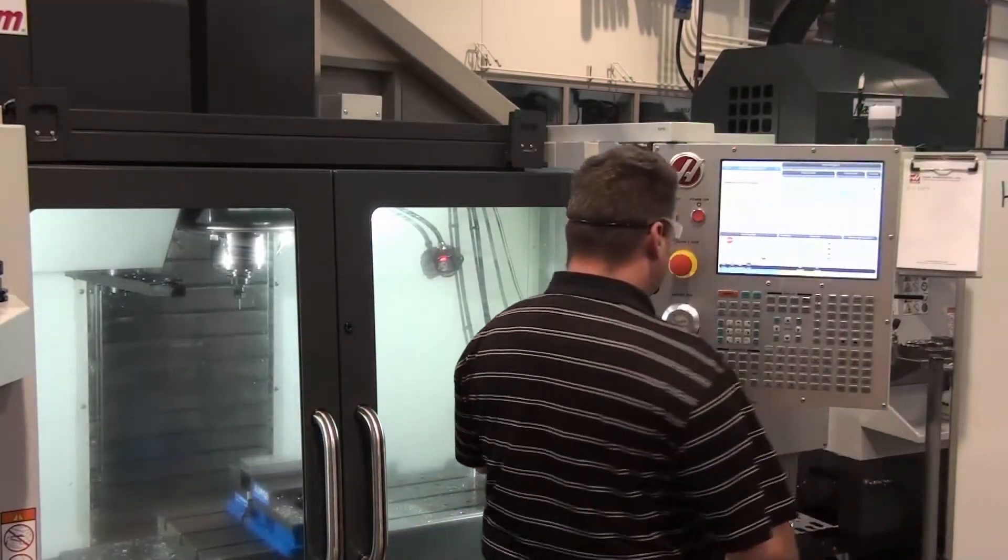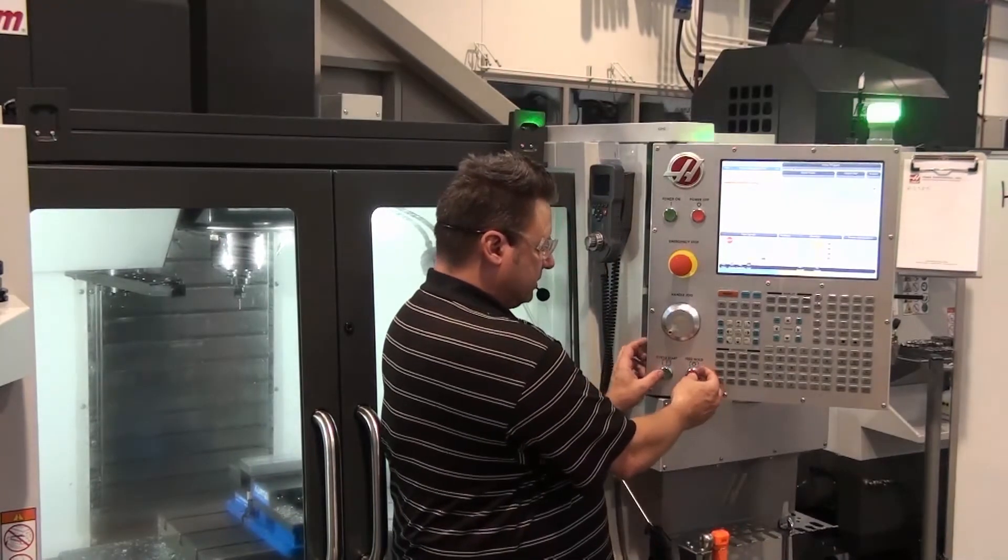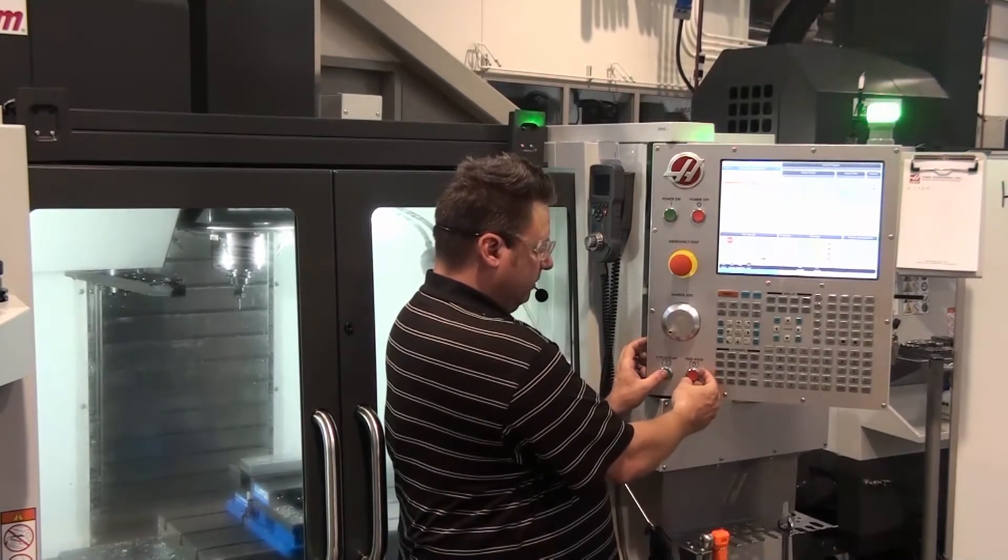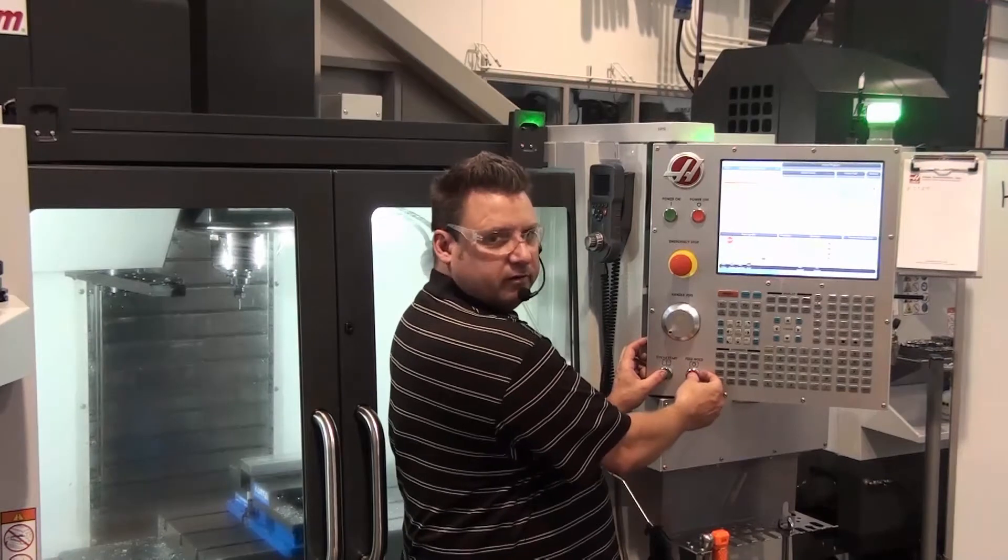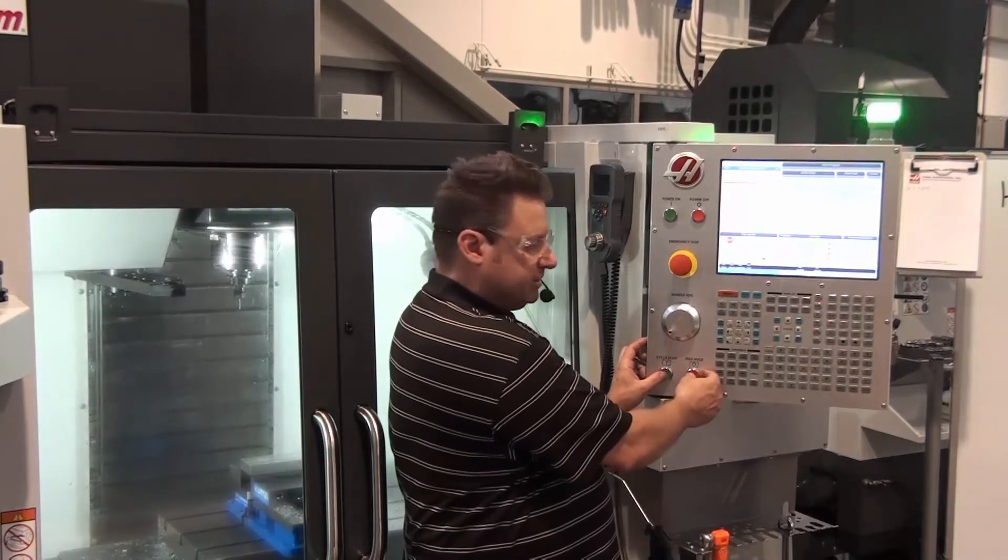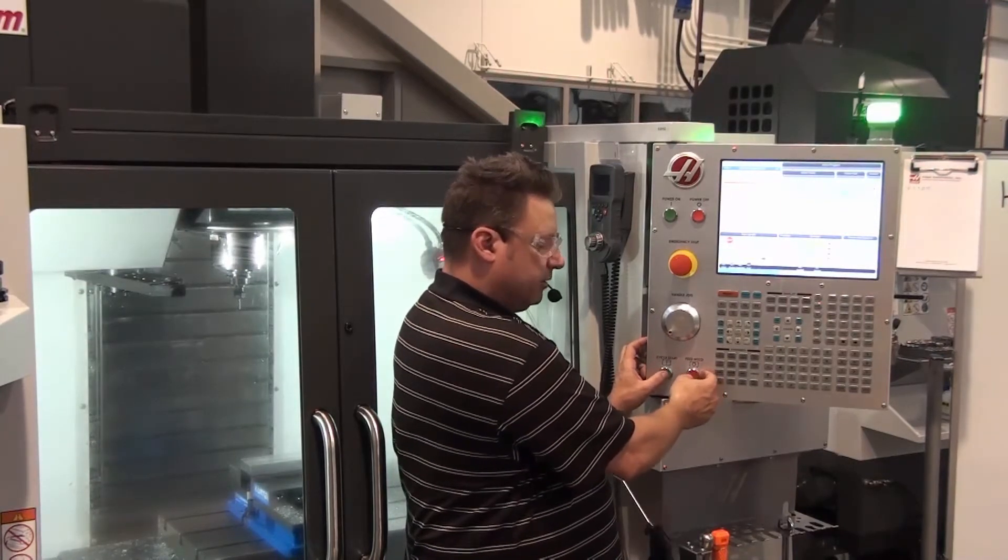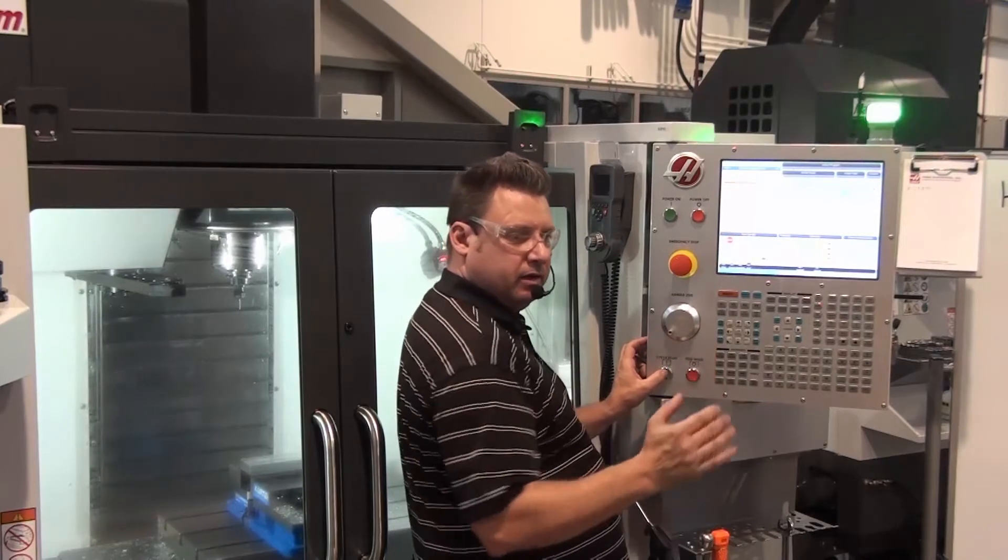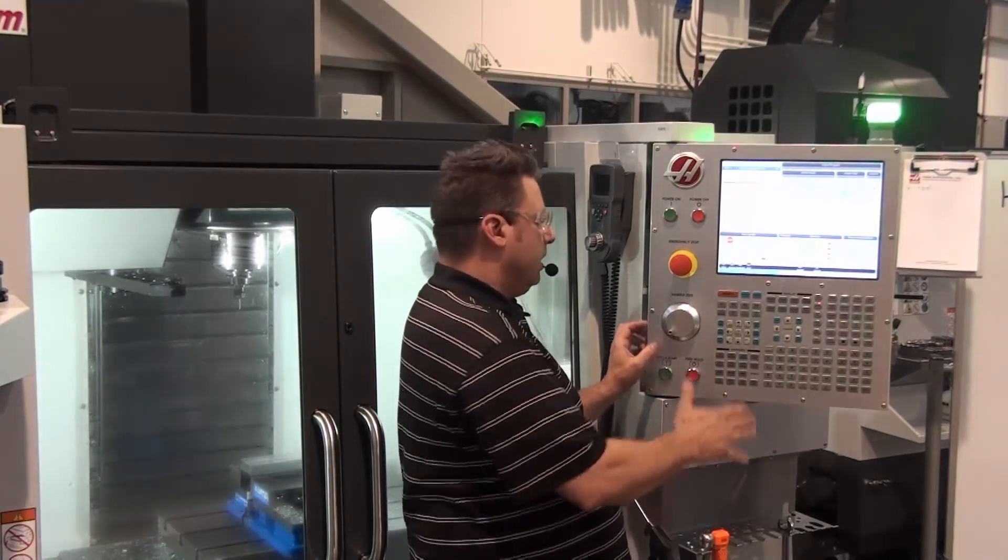Now, when I run my parts the first time, I usually have one finger on cycle start and one finger on feed hold. That way, if something's happening, I can page between the two of them and kind of sneak up on stuff.